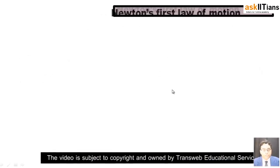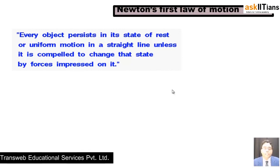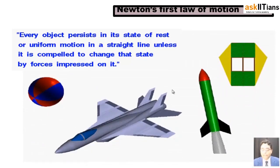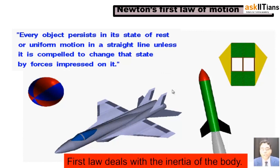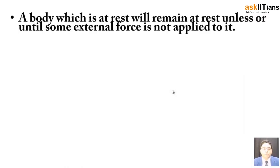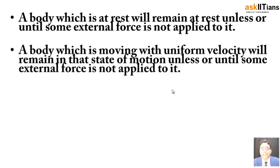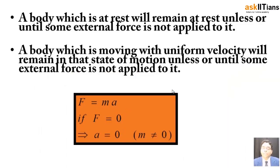We learned about Newton's first law of motion. Every object persists in a state of rest or uniform motion in a straight line unless it is compelled to change that state by forces that act on it. Objects will move only when there is an external force that acts on them. The first law deals with the inertia of motion of the body. A body at rest will remain at rest unless you apply an external force — that is inertia of rest. Similarly, a body moving with uniform velocity will remain in that state of uniform motion unless or until you apply an external force. If F = ma and the applied force F is zero, then acceleration is also zero, since mass cannot be zero.